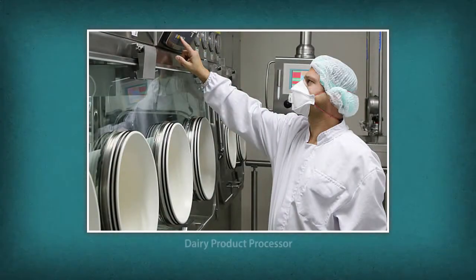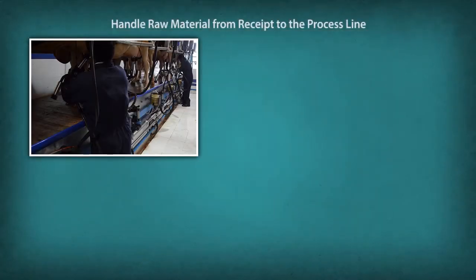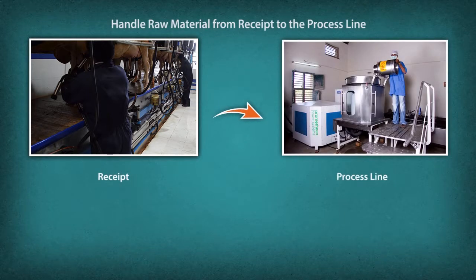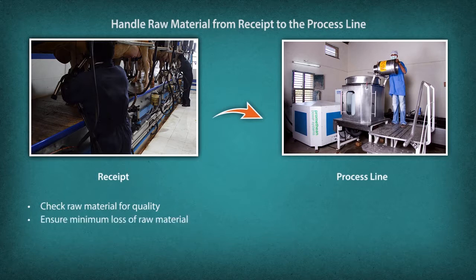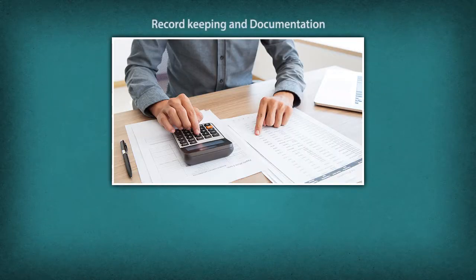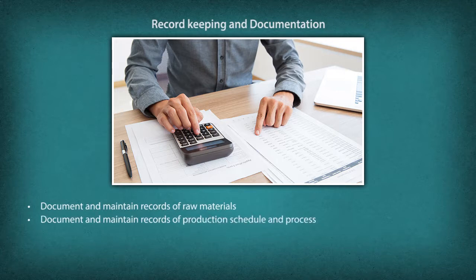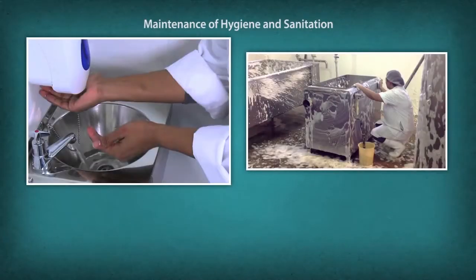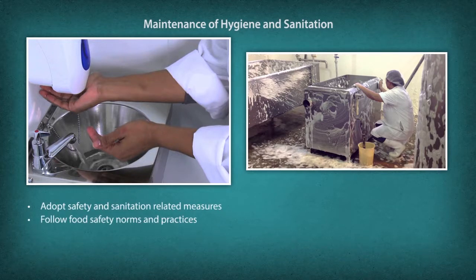Roles and responsibilities of a dairy product processor: Handle raw material from receipt to the process line. Check the raw material for quality. Ensure minimum loss of raw material. For record keeping and documentation: document and maintain records of raw materials, production schedule and process, and finished products. For maintenance of hygiene and sanitation: adopt safety and sanitation related measures and follow food safety norms and practices.